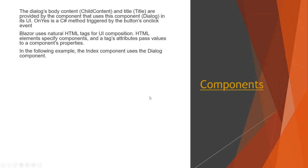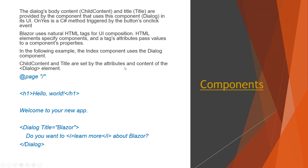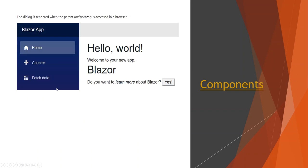Blazor uses natural HTML tags for UI composition. HTML elements specify components, and tag attributes pass values to component properties. In the following example, there's an index component that uses this dialog component as a nested component. The ChildContent and Title are set by the attributes and content of the dialog element. The dialog element's Title attribute is set to 'Blazor', and the content is 'Do you want to — within italics — learn more about Blazor?'